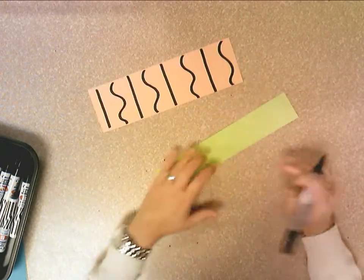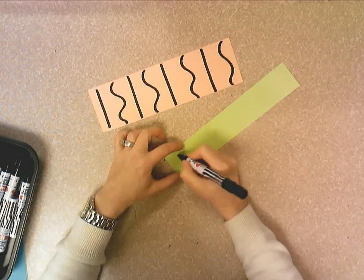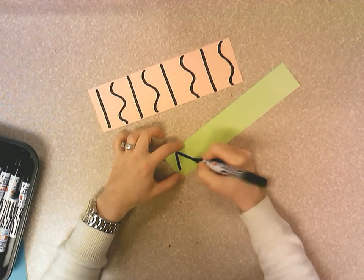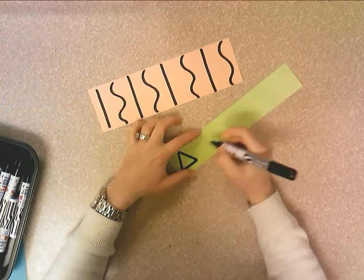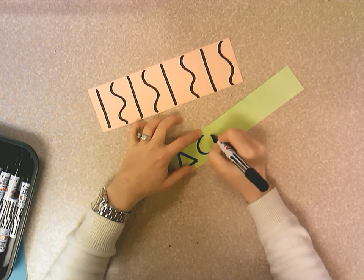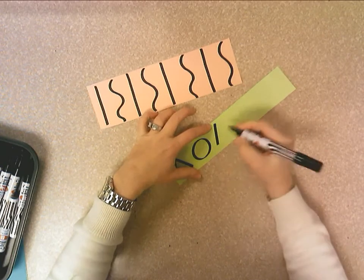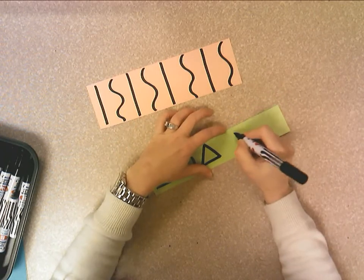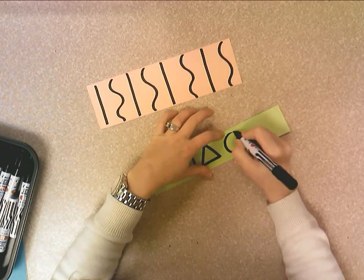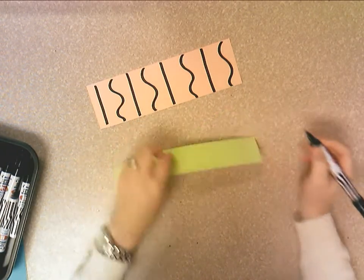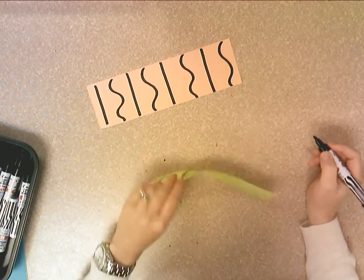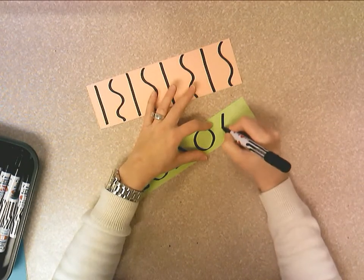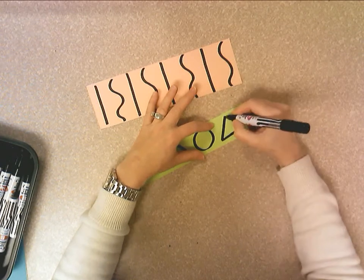And then on your next strip, maybe you'll do two shapes this time. Now you can't erase permanent markers, so if you make a mistake, you might need to flip it over and do it on the backside. Or you could do it in pencil first, if you're worried about making a mistake.